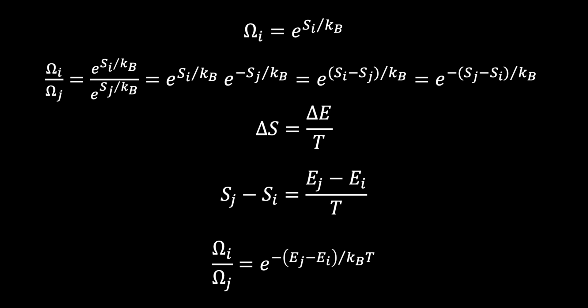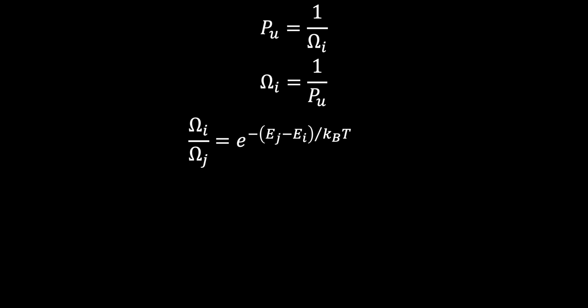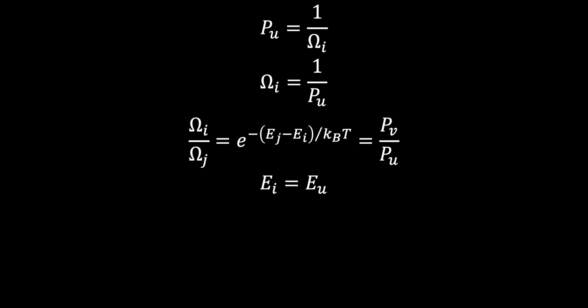Recall that for a state u in system i, the probability of being in state u equals 1 divided by the number of microstates in system i, since each microstate is equally likely. Thus, the number of microstates in system i equals 1 divided by the probability of being in state u. We can substitute to express the ratio in terms of probabilities of states u and v. Furthermore, because the energy of each microstate in an individual system is constant, the energy of system i equals the energy of any individual microstate u in system i, so we substitute i with u and j with v. At this point, we have derived the Boltzmann factor.